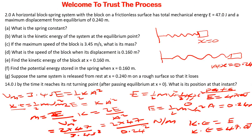The last part says: suppose the same system is released from rest at x equals 0.240 meters on a rough surface, so that it loses 14.0 joules by the time it reaches its first turning point after passing the equilibrium. Here, the block is resting on a rough surface, meaning there will be friction. That friction is what causes the system to lose 14 joules of energy. The system starts from x equals 0.24, and will lose 14.0 joules by the time it reaches its first turning point.